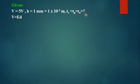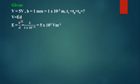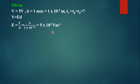For the electric field calculation, we use the relation V = E×D, so E = V/D. With V = 5 V and D = 1 mm = 1 × 10⁻³ m, the electric field E = 5 × 10³ V/m.